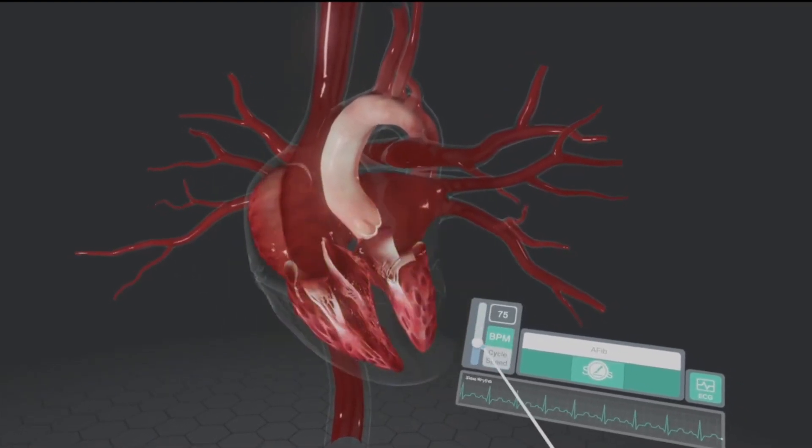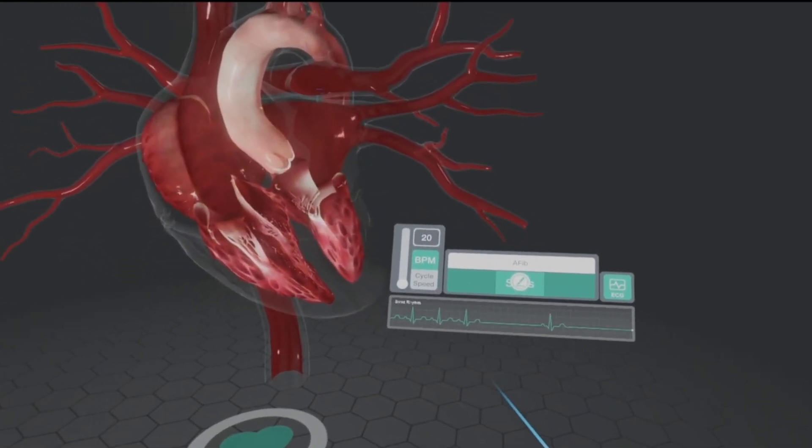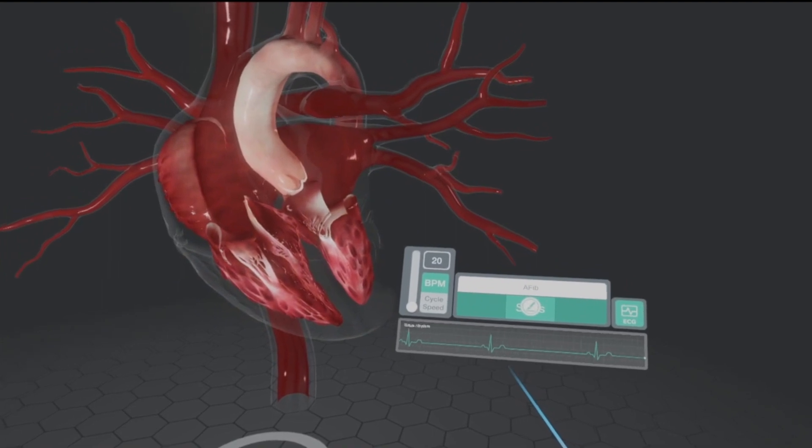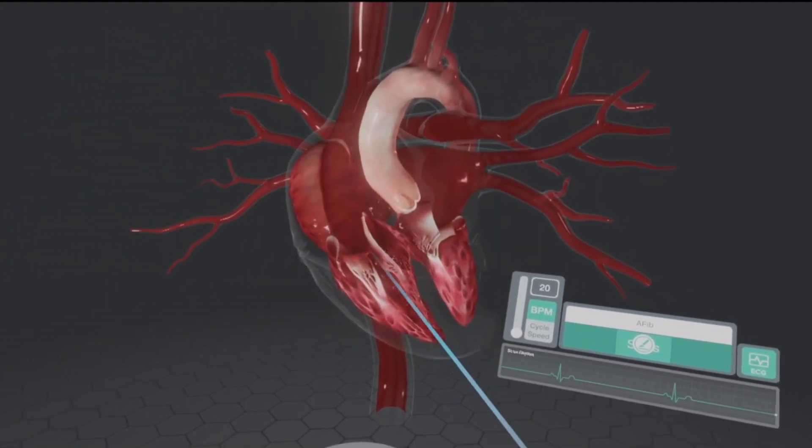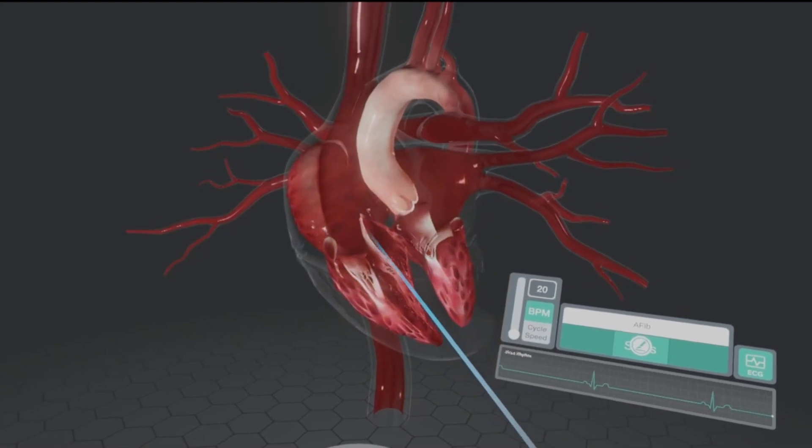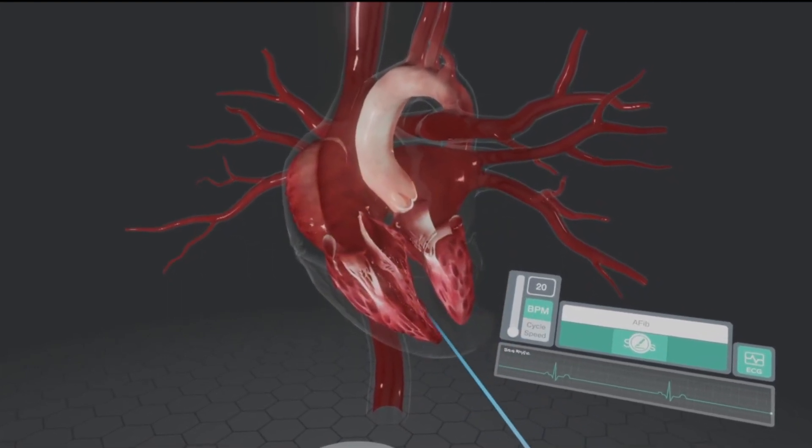Slow down the beats per minute so we can see it in the slower EKG rhythm. We're looking at sinus brady now. We put it at a rate of 20, so we can actually see how quick it still happens. We see the atrial contraction, followed immediately by the ventricular contraction.